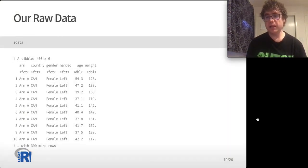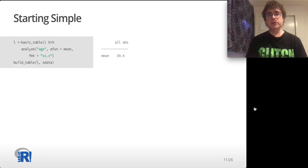This is the raw data that went into that table that I showed you a few minutes ago. You can see we have just six columns: we have arm, country, gender, handed which is handedness, age and weight. It doesn't really matter what these are because the data is completely made up anyway, but we have 400 rows, each row is an individual observation, this is the typical tidy data. So let's start simple.